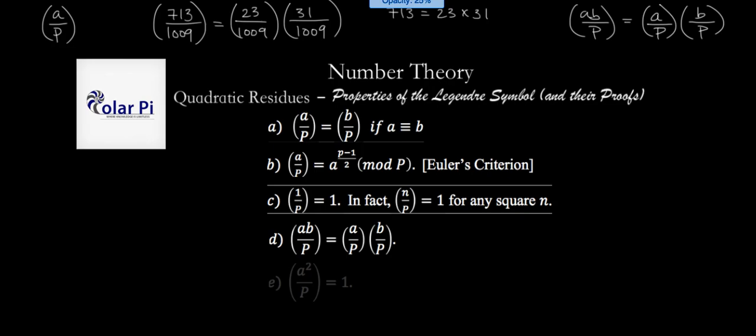And property E, as I said, is redundant to what I've stated in the second part of property C, which is that A squared over P is one. Yeah? Okay. So that's the same as saying N over P is equal to one for any square N, right?